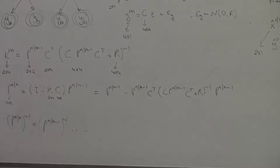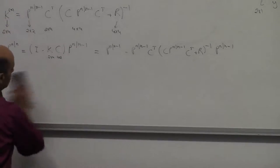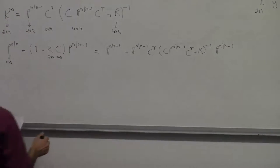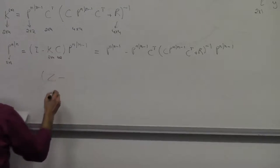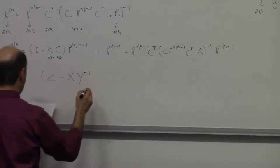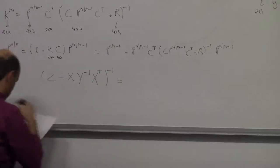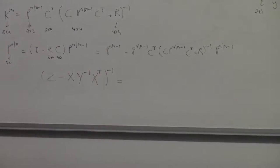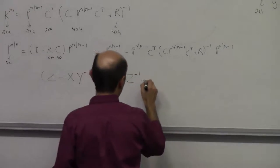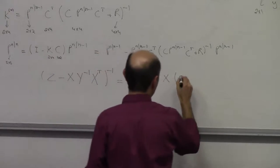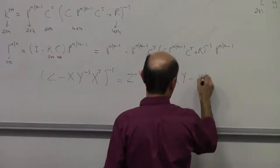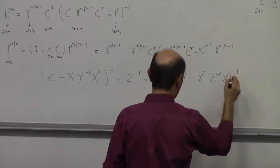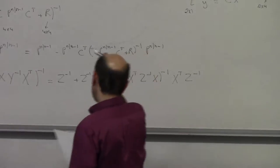This equation can be simplified using the matrix inversion lemma. The matrix inversion lemma states that: (Z minus X Y^{-1} X^T)^{-1} equals Z^{-1} plus Z^{-1} X (Y minus X^T Z^{-1} X)^{-1} X^T Z^{-1}.